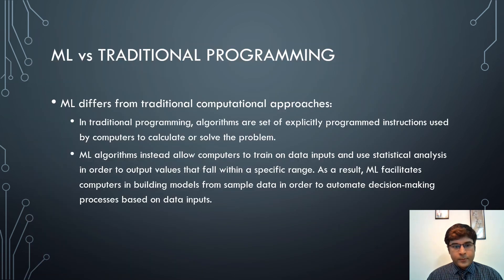Machine learning differs from traditional computation approaches as follows. In traditional programming, algorithms are a set of explicitly programmed instructions used by computers to calculate or solve a problem. Machine learning algorithms instead allow computers to train on data inputs and use statistical analysis in order to output values that fall within a specific range. As a result, machine learning facilitates computers in building models from sample data to automate decision-making processes based on data inputs.